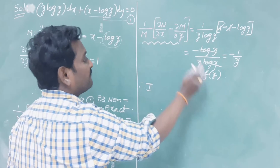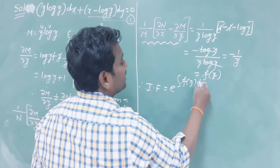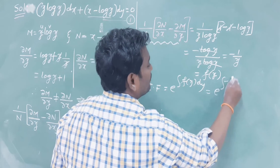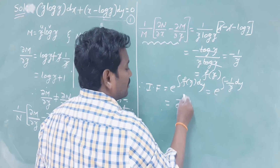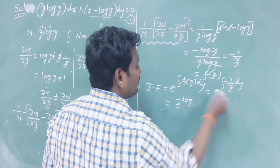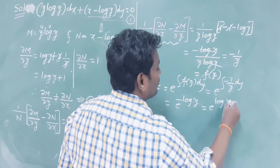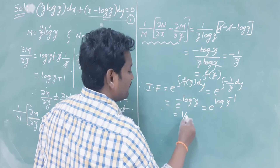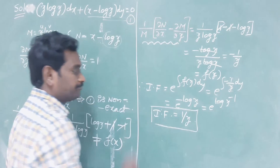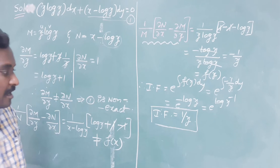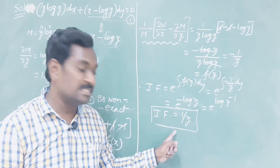When the result is a function of y only, the integrating factor is e^(∫f(y)dy). Here f(y) = -1/y, so the integrating factor is e^(∫-1/y dy) = e^(-log y) = e^(log y^(-1)) = 1/y. After finding the integrating factor, multiply the given non-exact equation by it.